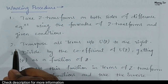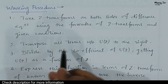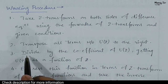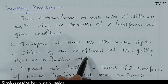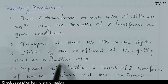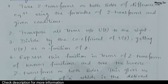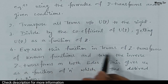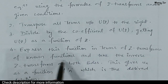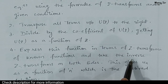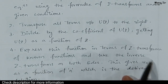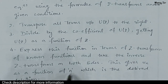Step 2: transpose all terms without U(Z) to the right. Step 3: divide by the coefficient of U(Z), getting U(Z) as a function of Z. Step 4: express this function in terms of Z transforms of unknown functions and take the inverse Z transform on both sides. This gives UN, which is the required solution as a function of N.